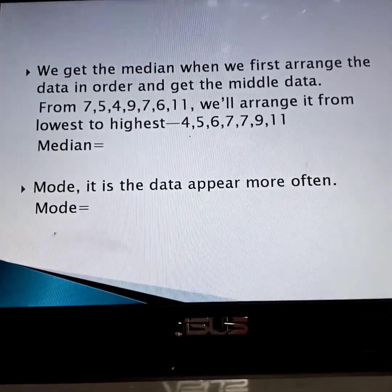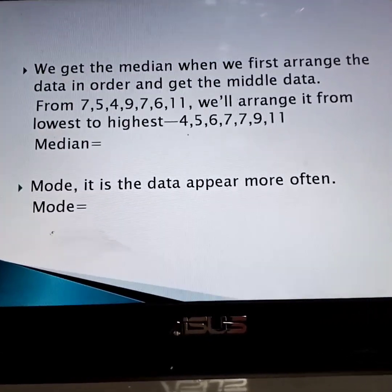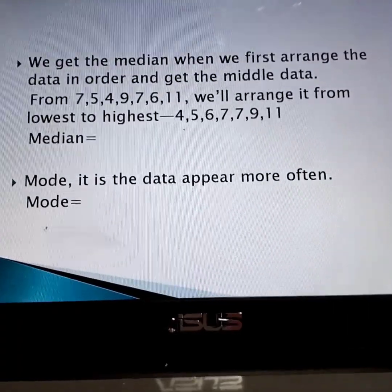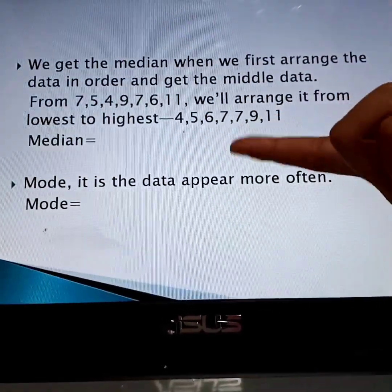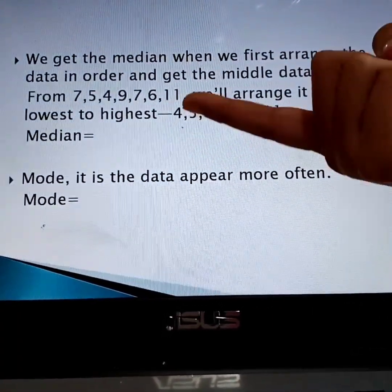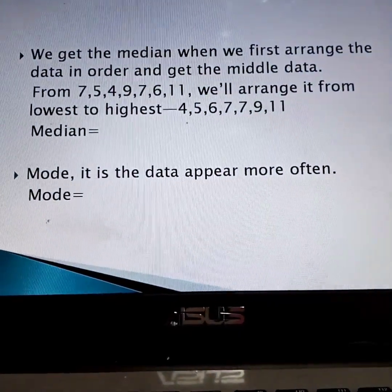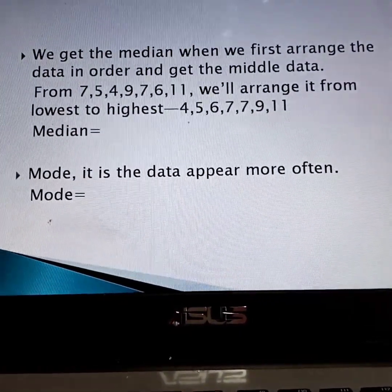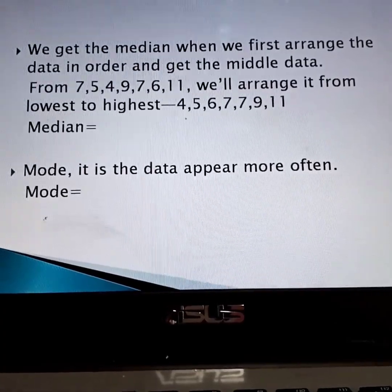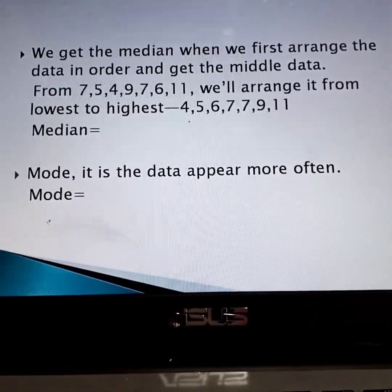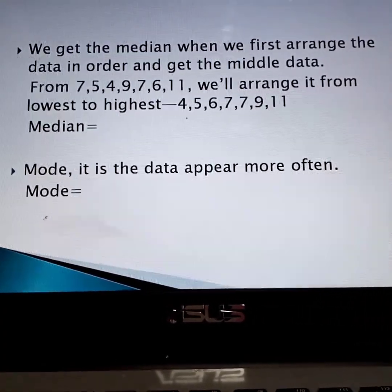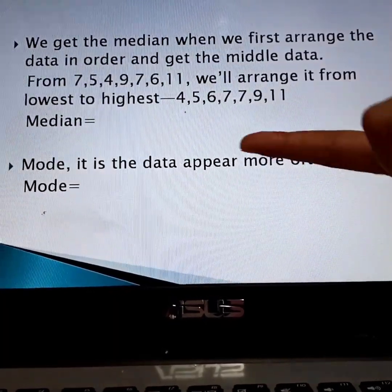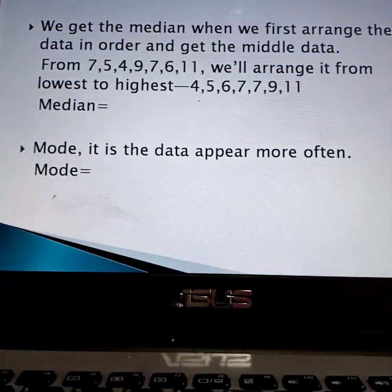How about the median? We arrange it from lowest to highest. What is the median? Gel — what is our answer? Very good, it's 7. How about the mode? It is the data that appears most often. Also 7.